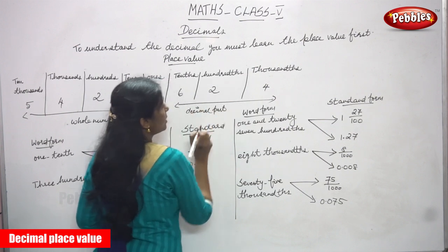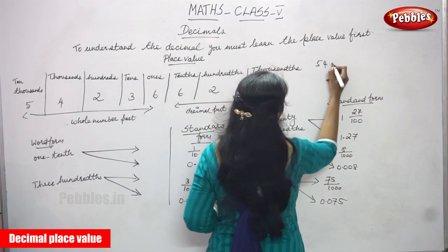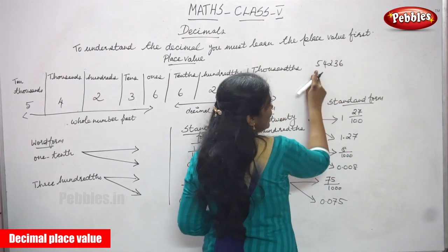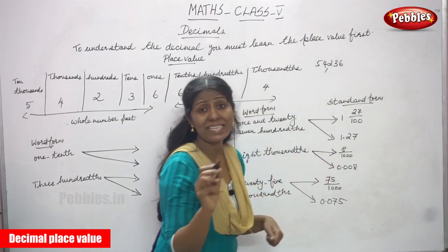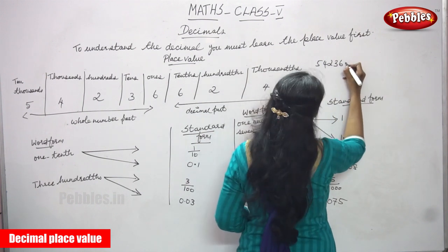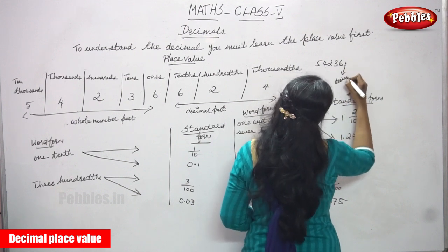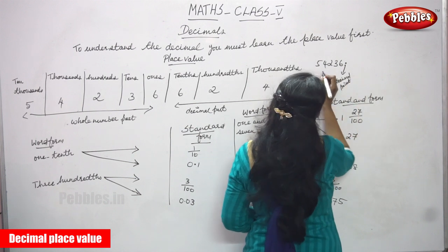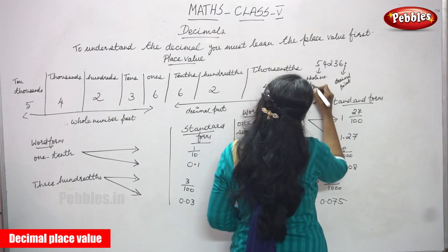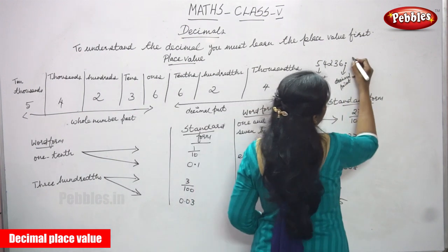You must write the number now. Look at this number: 5, 4, 2, 3, 6. That is 54,236. This is the whole part. Whole number part — after that, you must put a point. This point is called a decimal point. So 54,236 is the whole number part, followed by the decimal point.